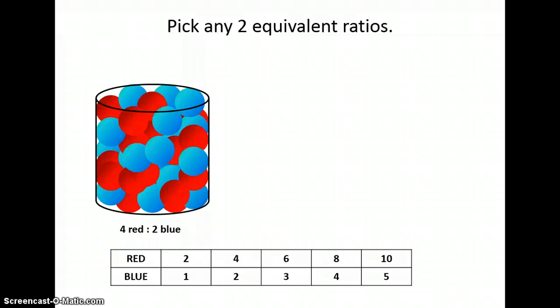Now let's pick any two equivalent ratios, because that's what I've created in this table. Equivalent ratios are the exact same thing as equivalent fractions. So I pick any two, and I'm going to pick four to two and ten to five, and write them so that they are equal. What I have just written now is a proportion.